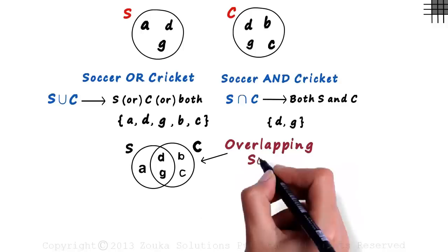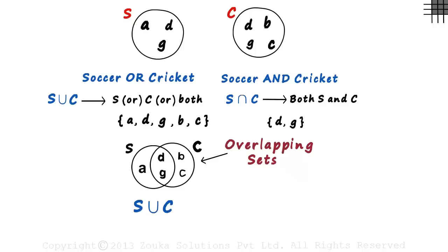Now we need to see how it helps us find S union C. It's simple. You just write all the elements you see here: A, D, G, B, and C. That's the advantage of using Venn diagrams well. It directly gives us a representation of all the elements in consideration.